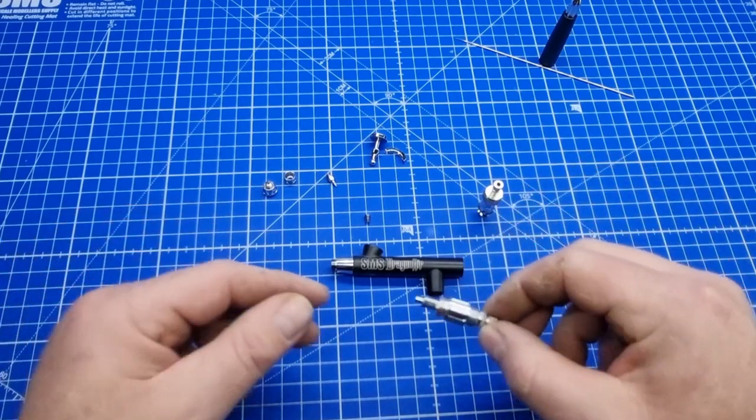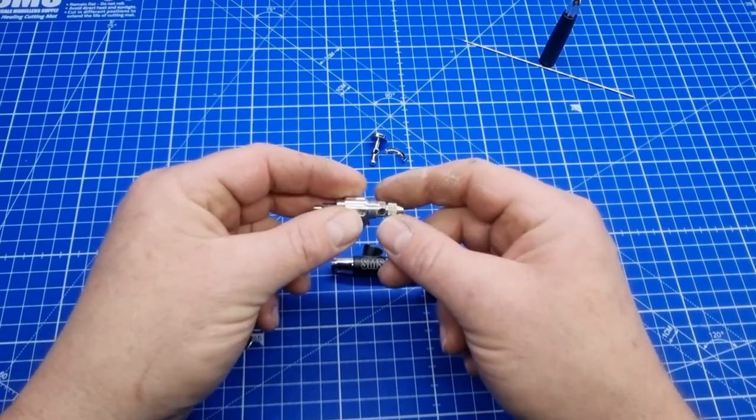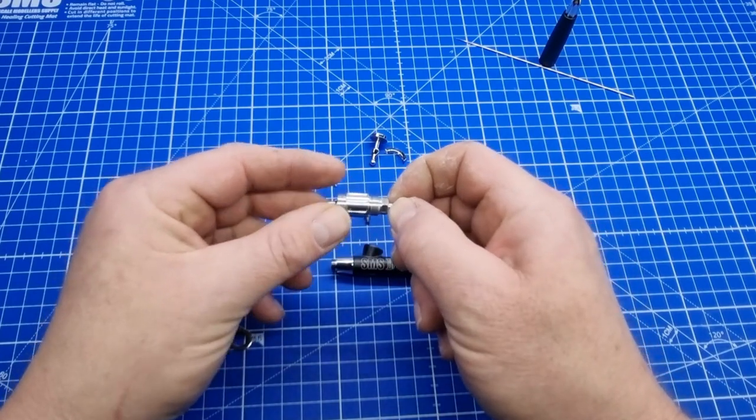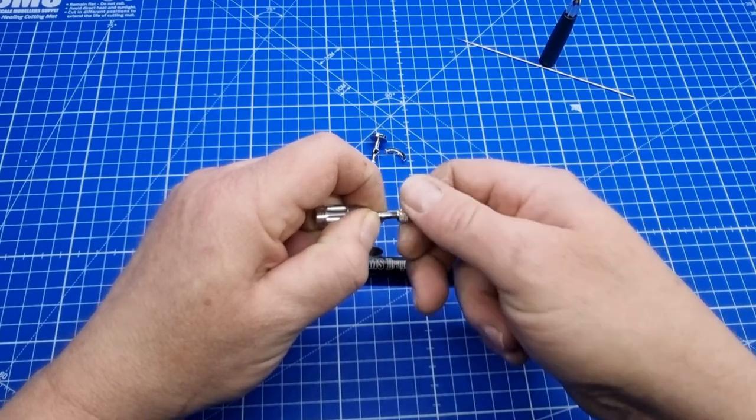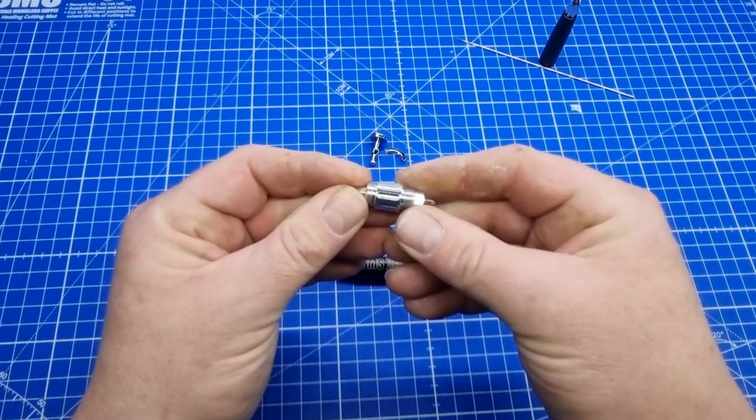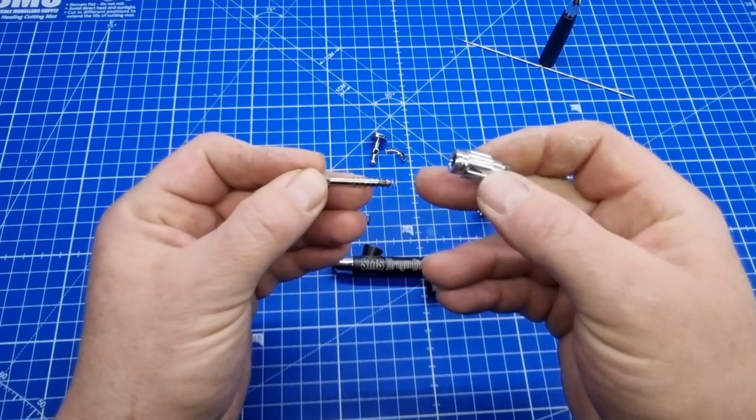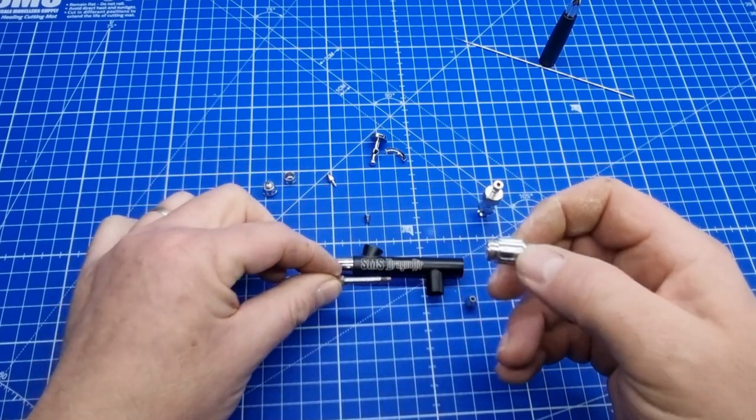The last part we can do if needed is strip this part down further too. To do that is simple: just pull that forward, undo the collet part there, and then just pop it at the other end. Be careful of the spring. You don't want to lose that spring because it is integral to how the lever action works on the airbrush.